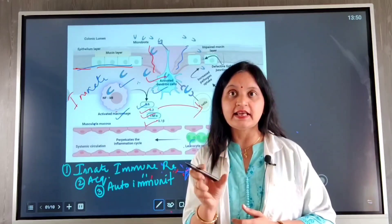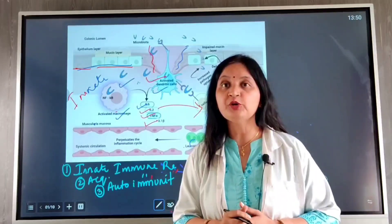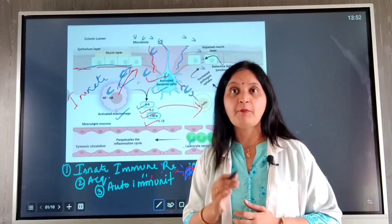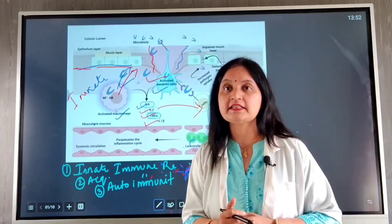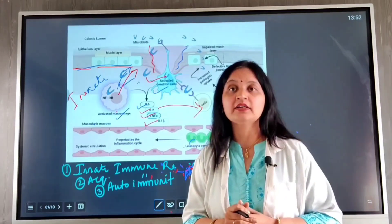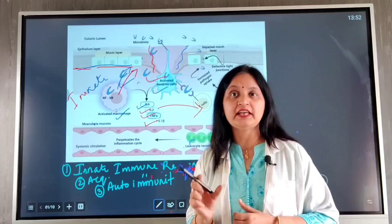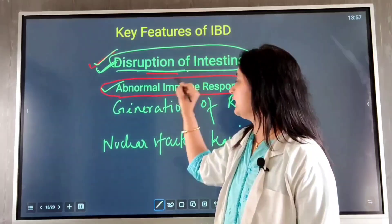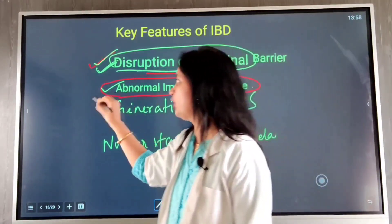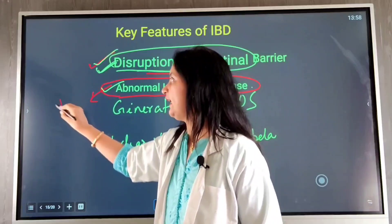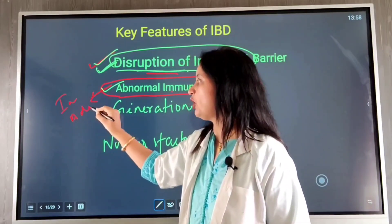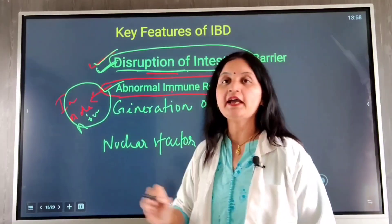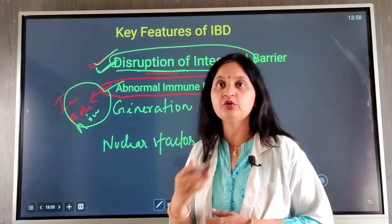Healthy normal intestinal cells are attacked, contributing to further inflammation. This is more pronounced in individuals predisposed to inflammatory bowel disease, because the genes associated with IBD are responsible for immune regulation and bacterial recognition. The disruption of the intestine leads to an abnormal immune response encompassing the innate immune response, the adaptive immune response, and the autoimmune response, all of which can aggravate chronic inflammation.